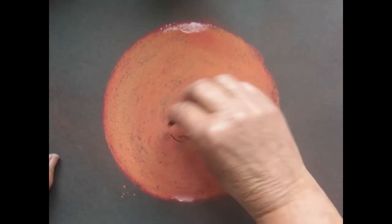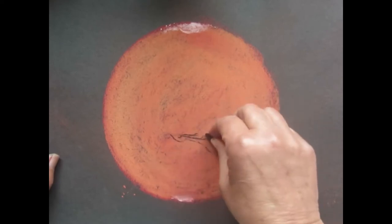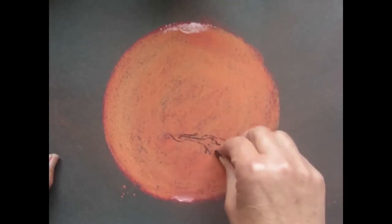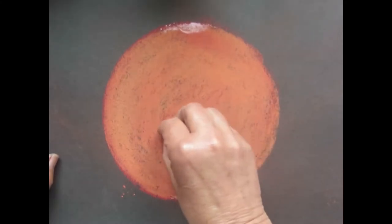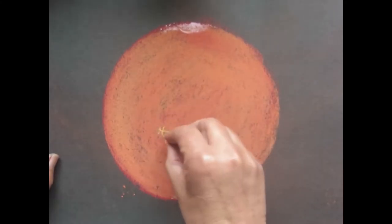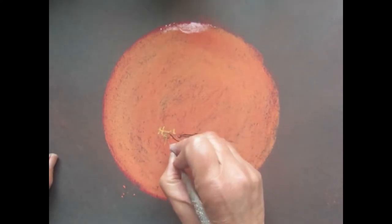Next, I'm drawing Valles Marineris, one of the largest valleys in the solar system. I'm using a very thin piece of pastel to draw in the shape of this enormous canyon. It is 4000 kilometers long, which is 2500 miles.